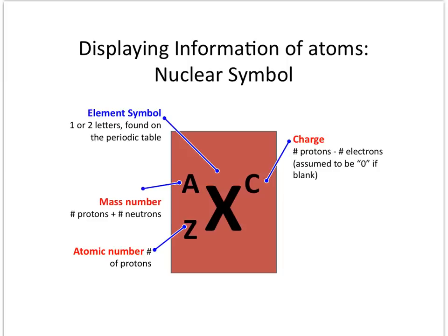One of the ways that we can display information about elements is through the use of a nuclear symbol. The nuclear symbol will have the element symbol. In the upper left corner, which is the superscript, you will place the mass number. In the lower left corner, as the subscript, you will place the atomic number. And if there is a charge for an ion, you will place that in the upper right-hand corner as another superscript.